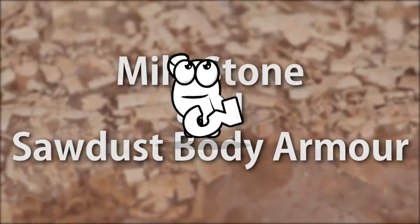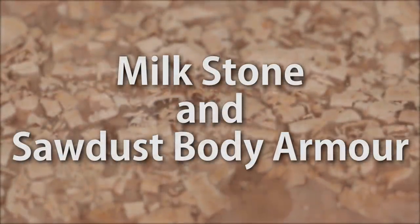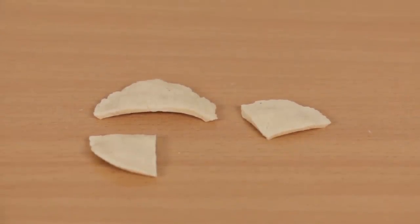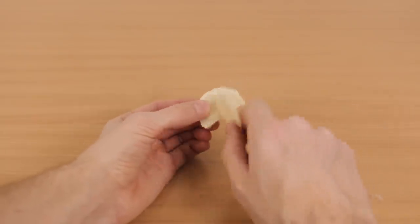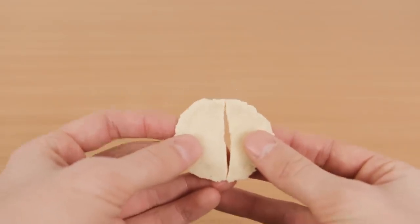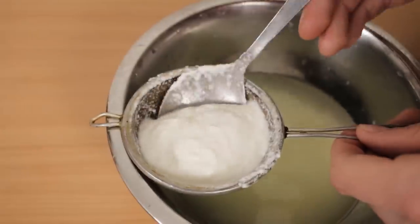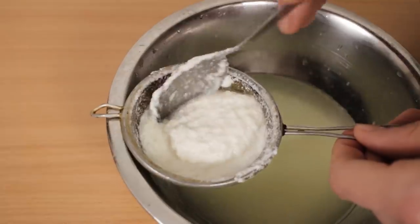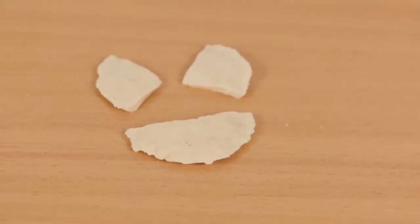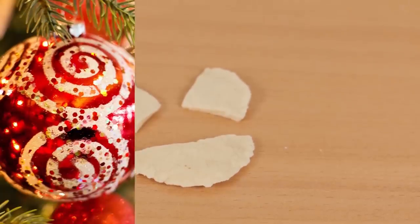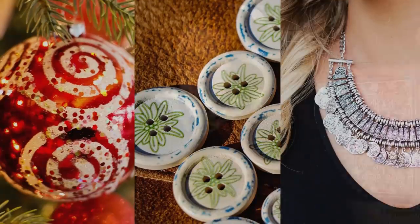Number three, milk stone and sawdust body armor. Milk can be used to create a hard stone-like substance in just a few easy steps. This substance, commonly known as milk stone, is actually a plastic. Milk contains molecules of a protein called casein. This can be extracted and molded, and when it dries, it forms a real plastic. Milk stone has actually been used throughout history to make ornaments, buttons, and jewelry. Milk stone jewelry was even created for Queen Mary of England.